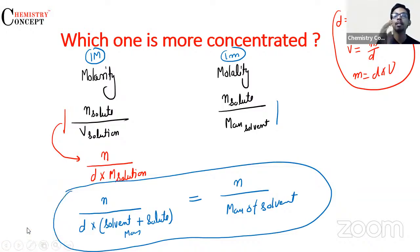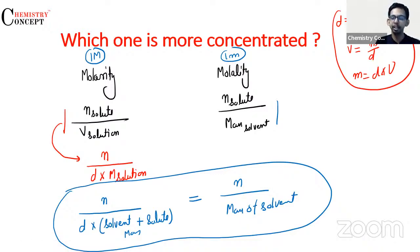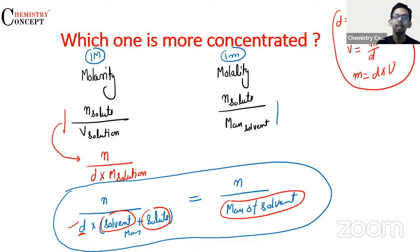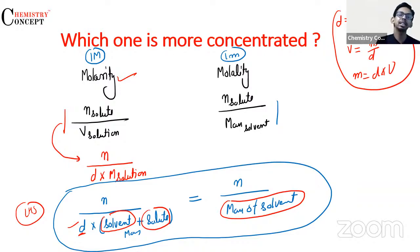Numerator aur denominator ka concept toh maloom hai na? Denominator neechay walon ko kehte hain. Zara dhyan se dekhiye: yahan pe denominator mein density hai, mass of solvent hai, aur mass of solute hai. Jabki doosri taraf denominator mein sirf mass of solvent hai. Toh denominator kiska bada hai? Left-hand side ka, yaani molarity ka.